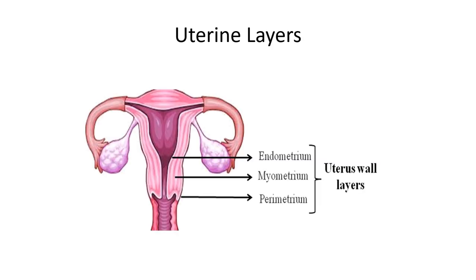Reviewing the uterine wall layers slide: the endometrium is the tissue that normally lines the uterus. In endometriosis, this endometrial tissue appears outside of the uterus — on the colon, fallopian tubes, or ovaries — where it should not be. The three layers visible are the endometrium, myometrium, and perimetrium.